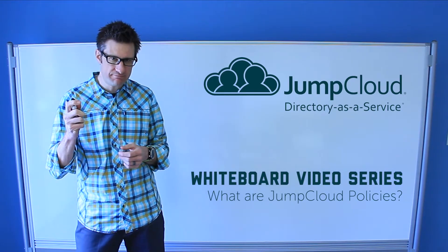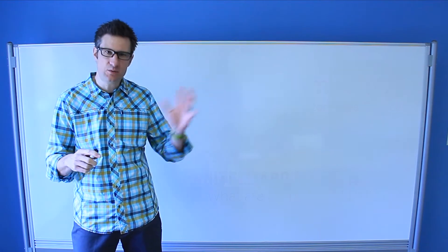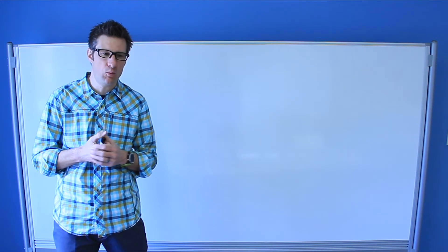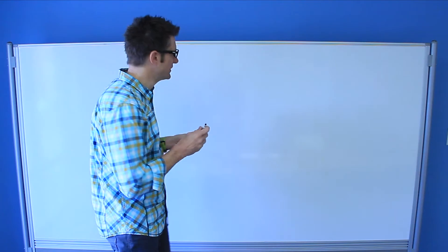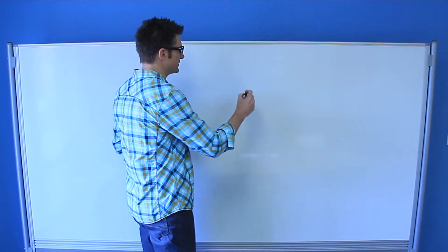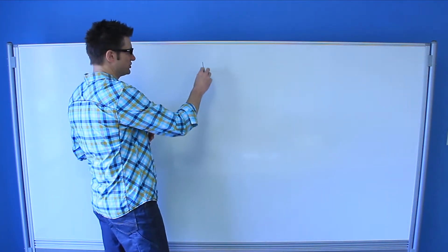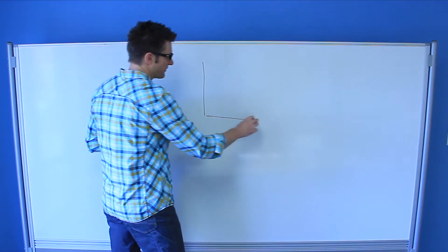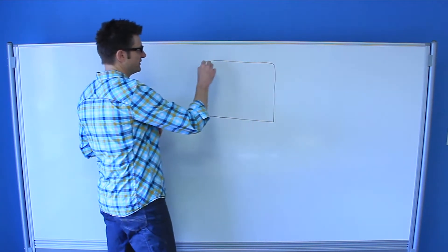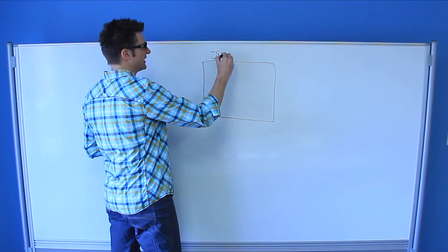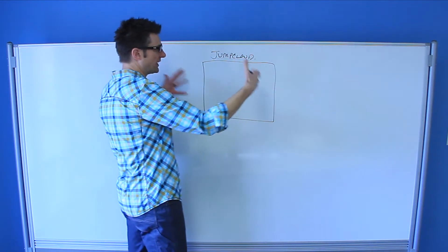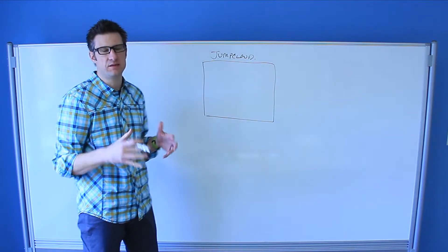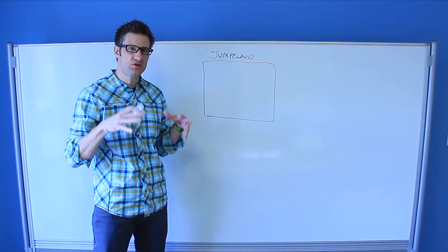So let's use this pen, let's draw our boxes like we've done in our prior whiteboard videos, and we're going to demonstrate to you how this works. First let's utilize JumpCloud from our cloud-based platform here in this box. Just assume that this is the cloud-based infrastructure and the administrative view into policies.